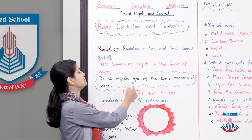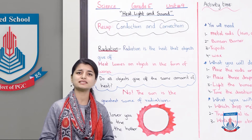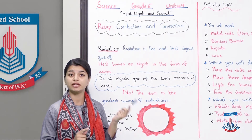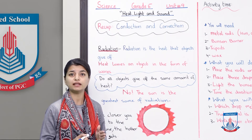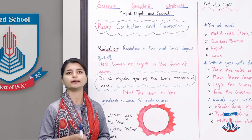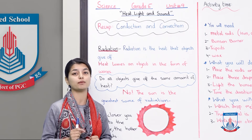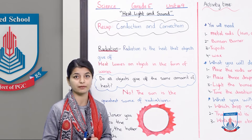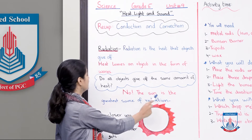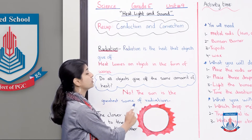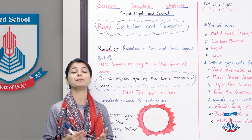Do all objects give off the same amount of heat? We are saying that heat comes out of every object — does this marker radiate heat, does this board radiate heat? No, absolutely not. Only a few objects truly radiate heat. And what is the greatest source? The sun is the greatest source of radiation.